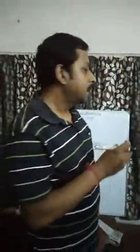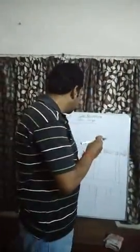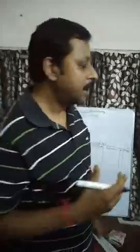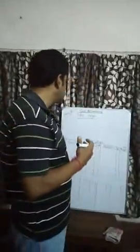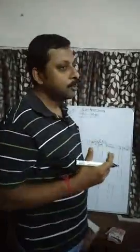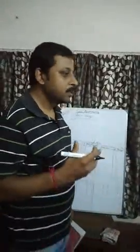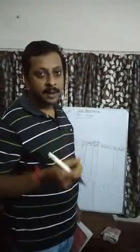We take from the journal and post in the Ledger. So Ledger is also an important part because the balances of the Ledger are used to make the trial balance. And from the trial balance, we actually make our final accounts, which we will learn later.